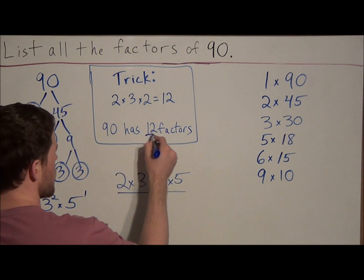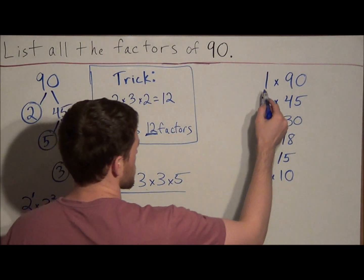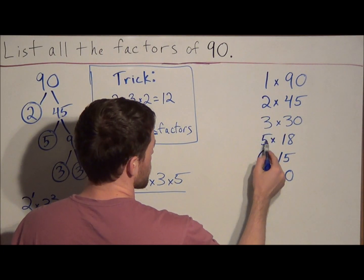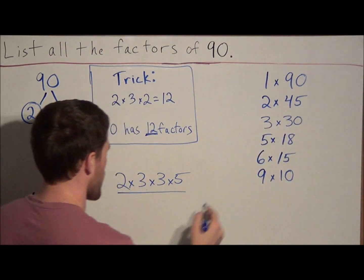But remember what we said before. We said 90 has 12 factors. And if we count them, we have 1, 2, 3, 4, 5, 6, 7, 8, 9, 10, 11, 12 factors.